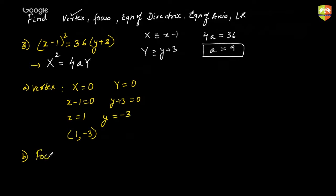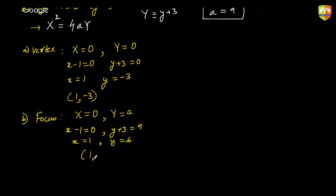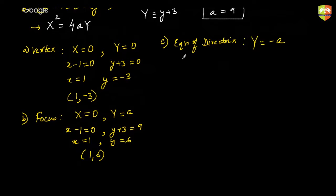Next is focus. For such cases focus is at (0, a), so I write capital X as 0 and capital Y as a. x minus 1 equals 0 and y plus 3 equals 9, which means x equals 1 and y equals 6. So (1, 6) is your focus. Equation of the directrix for such cases is y equals −a, so y plus 3 equals −9, giving y plus 12 equal to 0 as the required directrix.